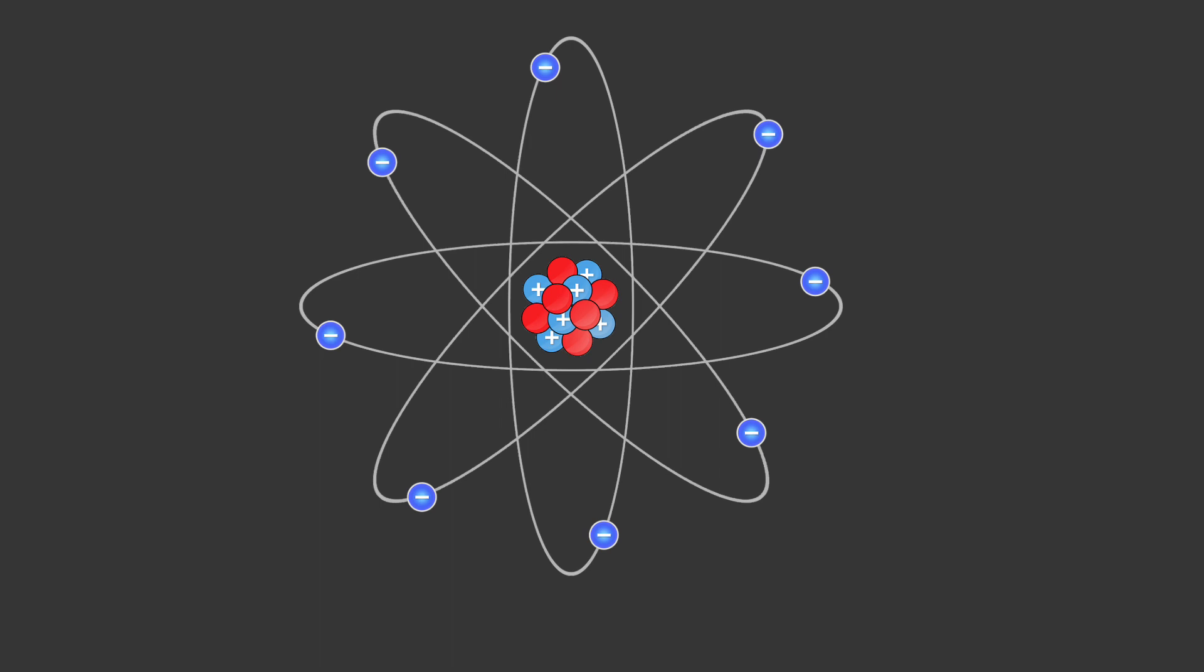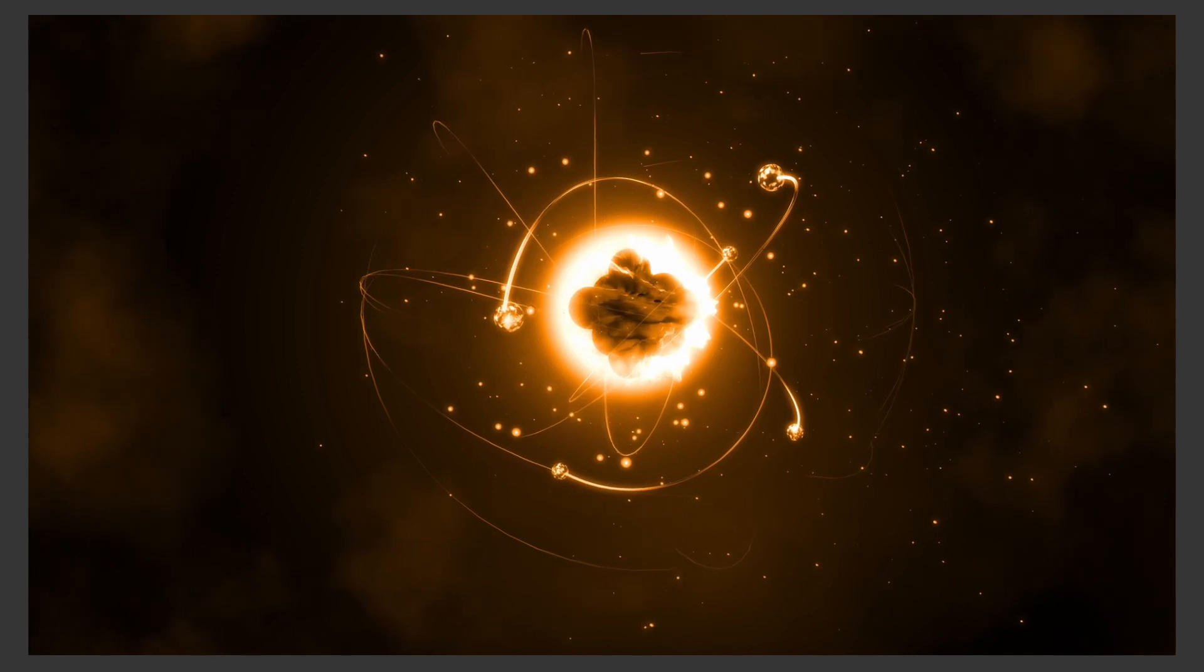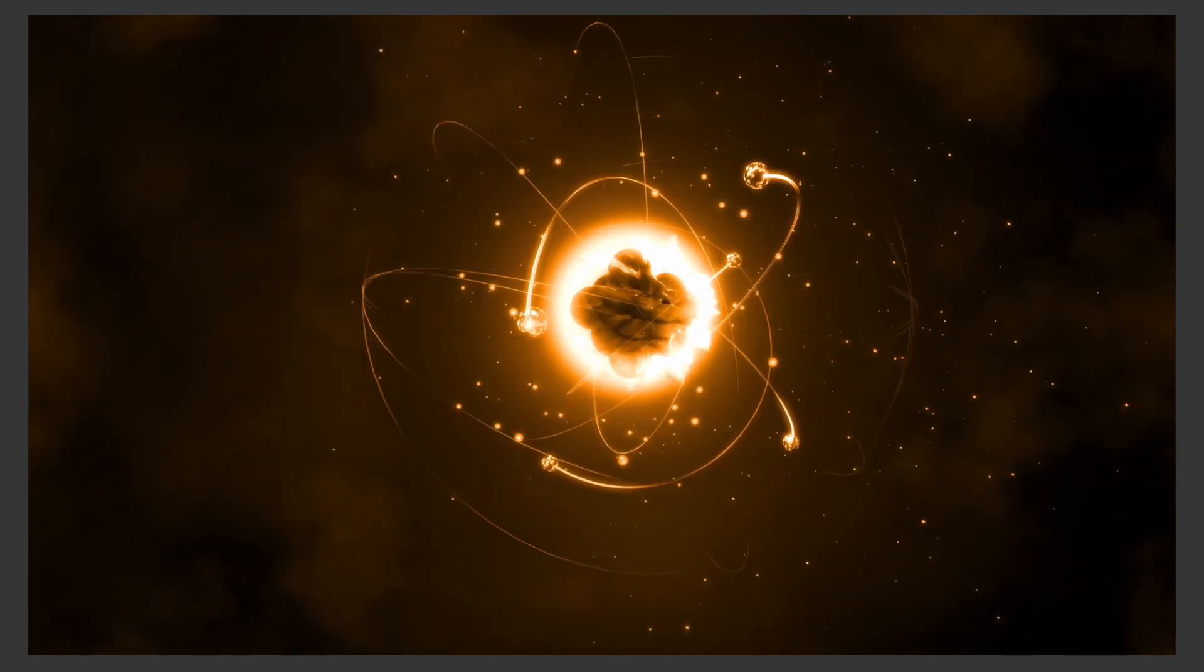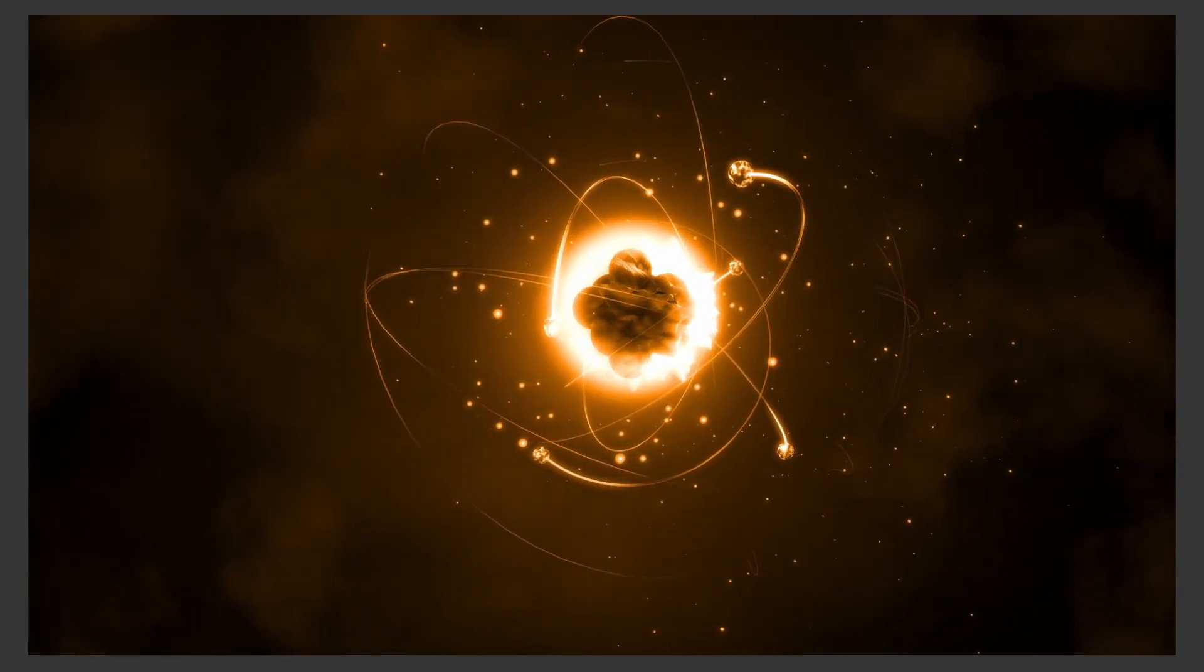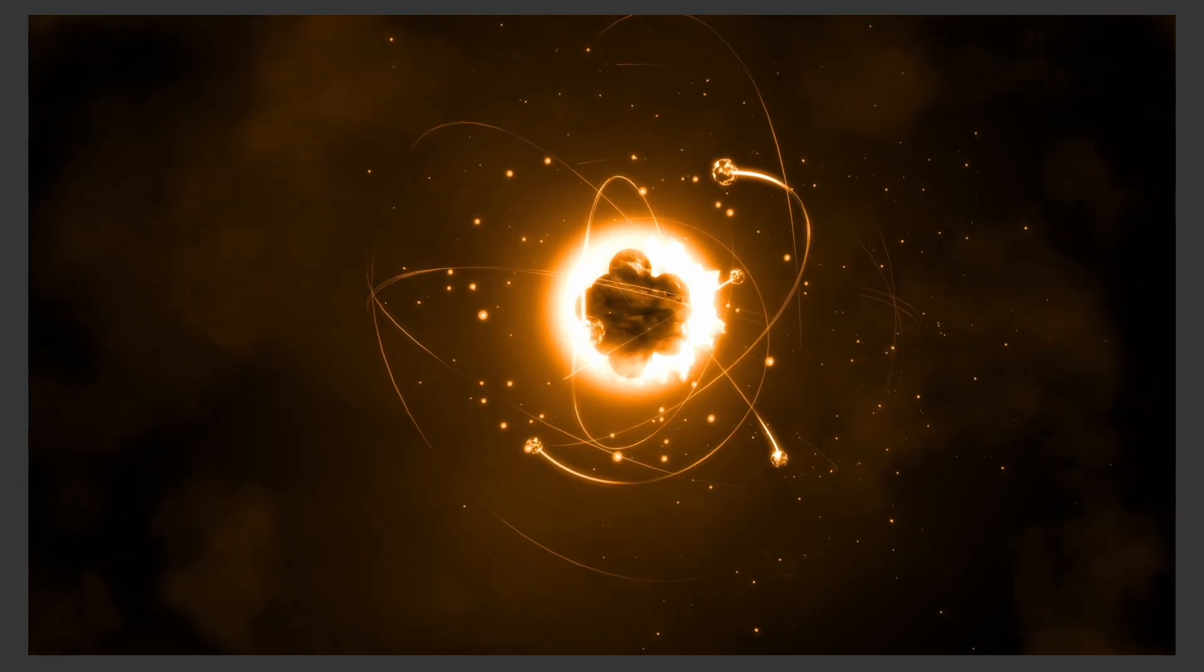Mass number. The mass number of an atom is the total number of protons and neutrons in its nucleus. It is often denoted by the symbol A. The mass number represents the atom's mass relative to the mass of a carbon-12 atom, which is assigned a mass number of 12. The mass number determines the atom's mass and is used to calculate its atomic mass.